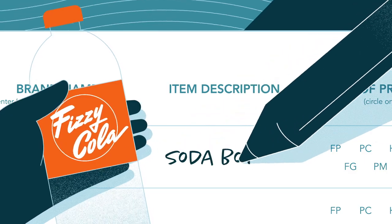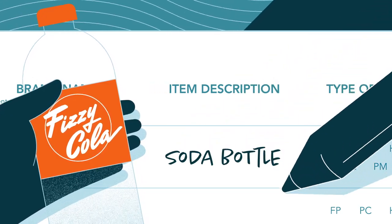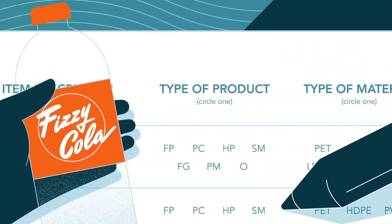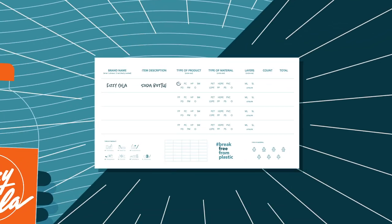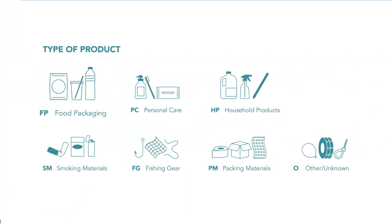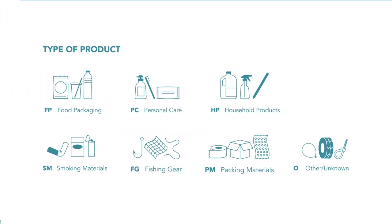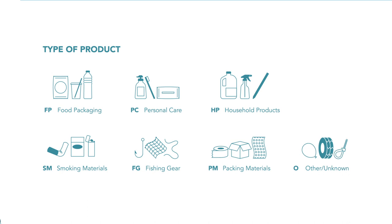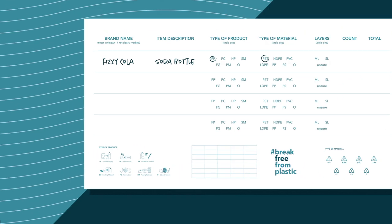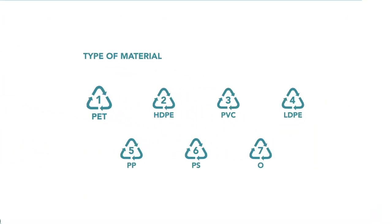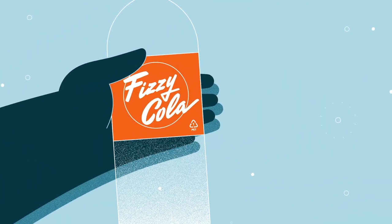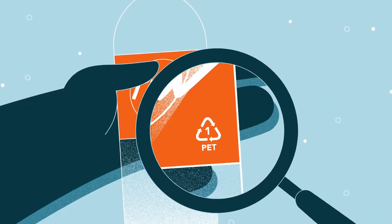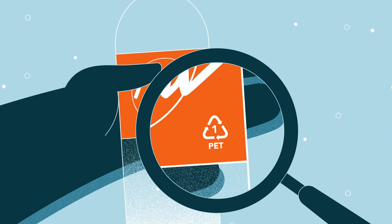Next, enter the item description. Then, circle the type of product. Check out the key on the bottom left of the data card for the appropriate abbreviations. After that, circle the type of material. Refer to the key on the bottom right of the data card for the appropriate abbreviations. If you find the number inside the chasing arrows symbol, you'll know.